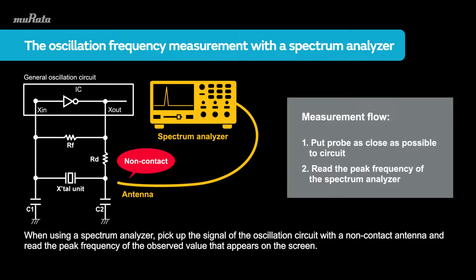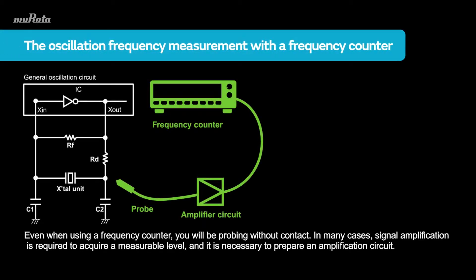When using a spectrum analyzer, pick up the signal of the oscillation circuit with a non-contact antenna and read the peak frequency of the observed value that appears on the screen. Even when using a frequency counter, you will be probing without contact. In many cases, signal amplification is required to acquire a measurable level, and it is necessary to prepare an amplification circuit.